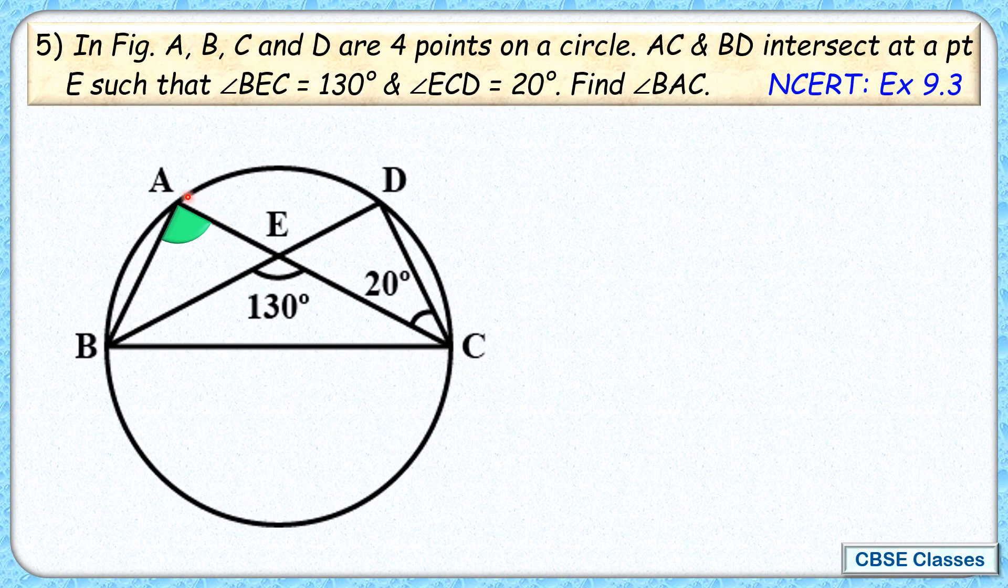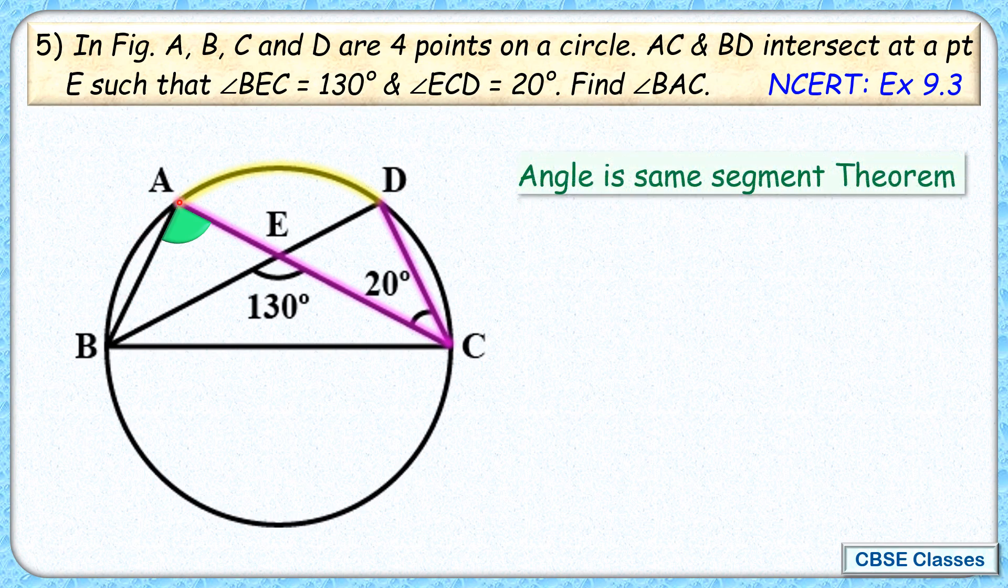Let's check the solution. If you concentrate on arc AD, you'll find it's making an angle of 20 degrees at the segment. By the angle in the same segment theorem, the angle made by this arc at any point in this segment will be the same 20 degrees. Thus, angle ABD - this blue angle - will be 20 degrees.